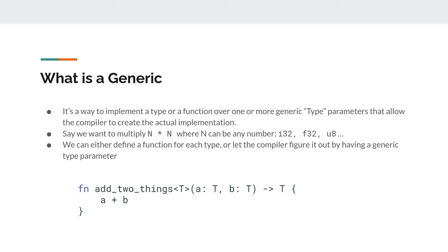So let's start by asking ourselves: what is a generic? In a way, it's a way to implement a type or a function over one or more generic type parameters, which allows the compiler to create the actual implementation of that type or function. If you're familiar with templates in C++, that's a form of generics. Java has generics, Scala has generics. Golang does not — at least not yet, they've discussed adding it. And Rust does.